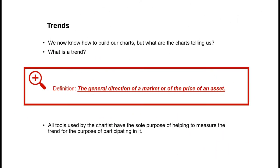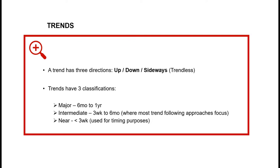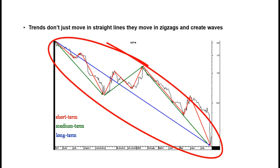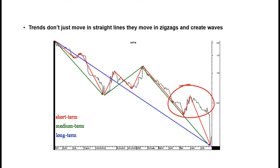We're now going to look at trends. What's a trend? It's the general direction of a market or the price of an asset — going up, down, or sideways (trendless). It has three major time classifications: six months to one year, three weeks to six months, and less than three weeks for timing purposes. A chart shows us these three different periods: a longer term blue line, green lines showing medium term trend, and red for the short term. By determining the direction of the trend, you'll come up with three trading decisions: go long, go short, or do absolutely nothing and stay on the sidelines.